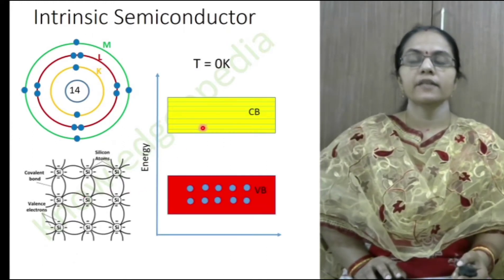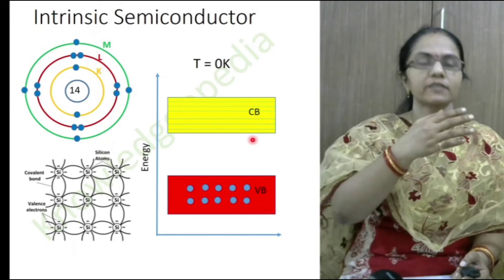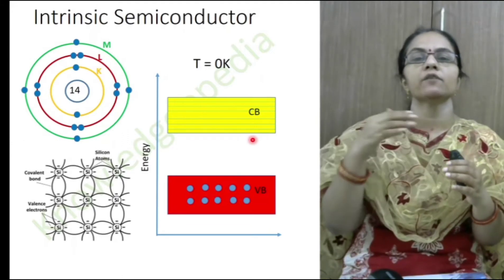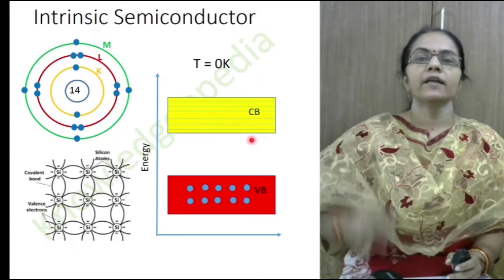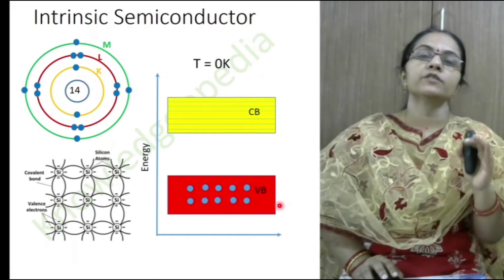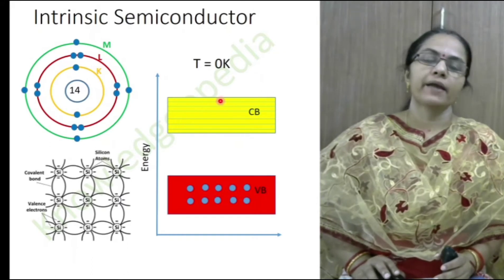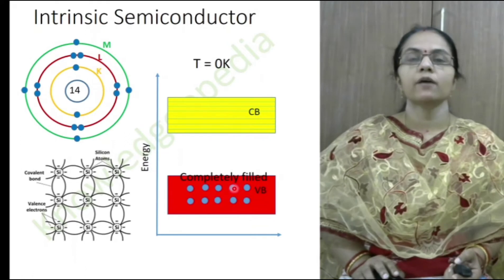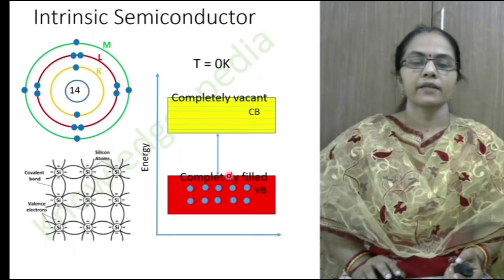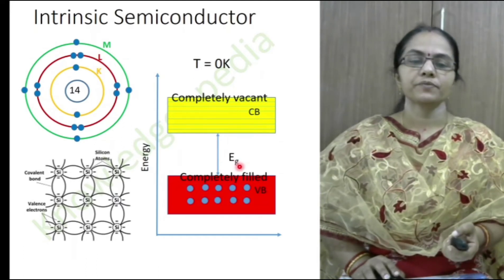Looking at the band structure at 0 Kelvin: as discussed in the previous class, when atoms come closer there is redistribution and splitting of energy levels, and those split energy levels form different bands. The topmost occupied level is the valence band and the lowest unoccupied band is the conduction band. The gap between them is known as the forbidden energy gap, EG.